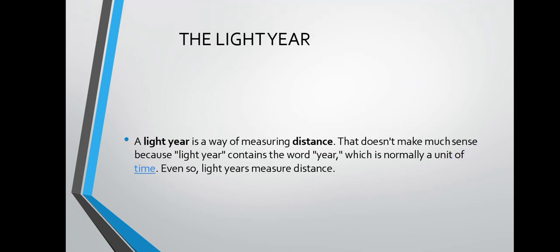Next, the light year. What is a light year? A light year is a way of measuring distance — the distance light travels in one year. It may not seem to make sense because the word 'year' is normally a unit of time, but even so, light years measure distance. The point of remembrance is that a light year measures distance.